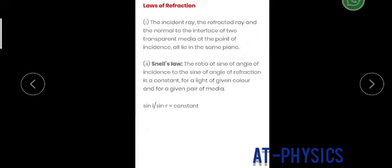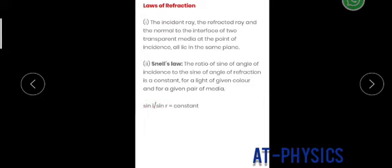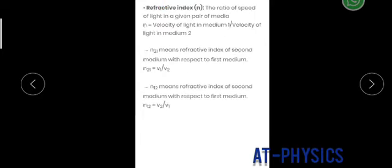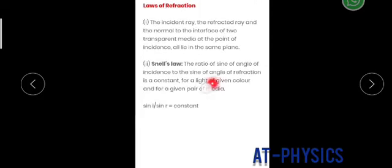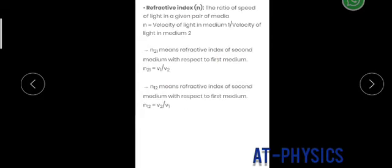The second law states: the ratio of the sine of the angle of incidence to the sine of the angle of refraction is a constant. So sine i upon sine r equals a constant. This is a very important law of refraction from the examination point of view, and this constant is known as the refractive index.